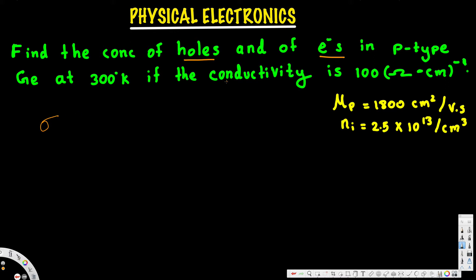Since we have p-type, compared to holes the electron contribution can be neglected. So we use the conductivity equation in terms of holes: σ = p·q·μp. The conductivity is given as 100, we are solving for p, the charge q is 1.6×10⁻¹⁹, and we assume μp = 1800 cm²/V·s at 300 K.